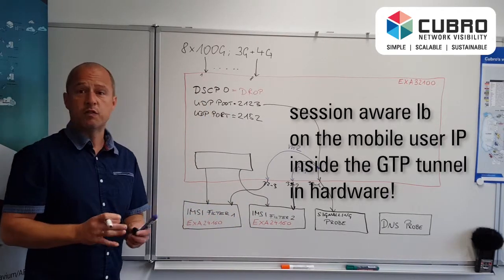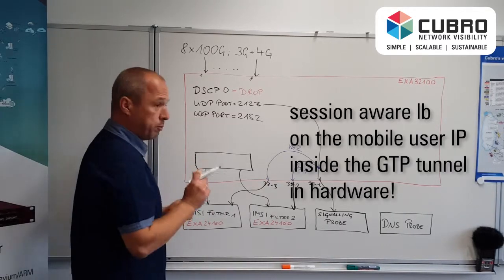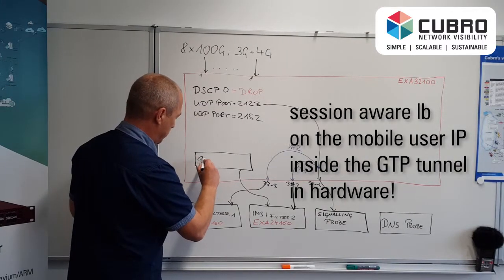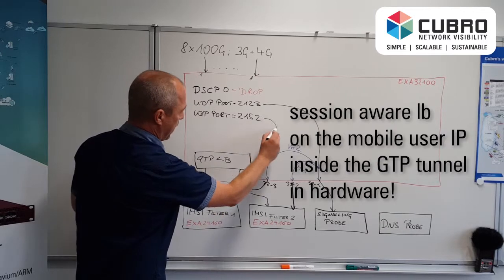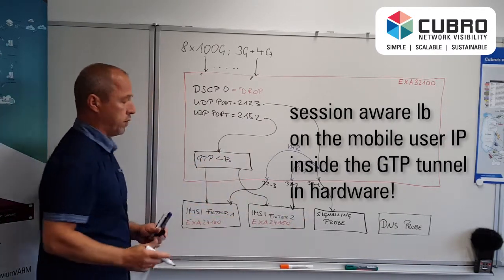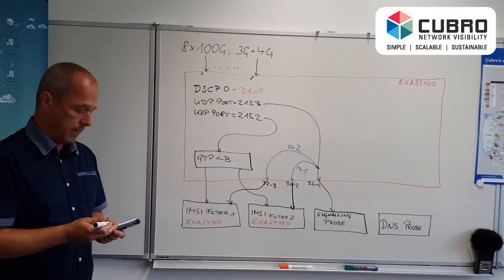And important for load balancing is we are using here GTP load balancing, which means we are doing load balancing based on the inner IP. GTP load balancing. This traffic we feed in here and that group here just distributes the traffic nicely, just that both filter probes have the same input probe.